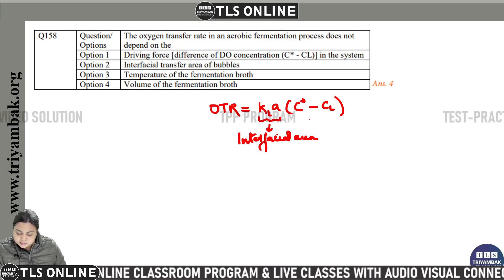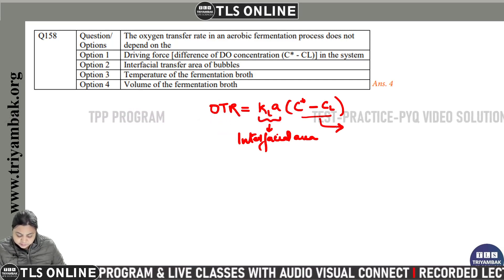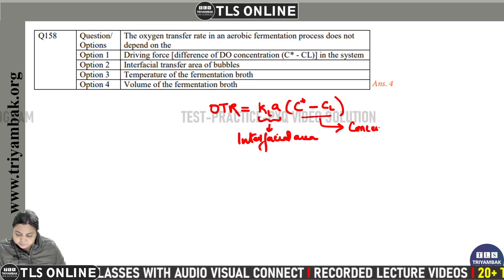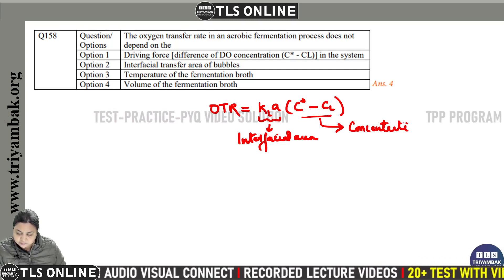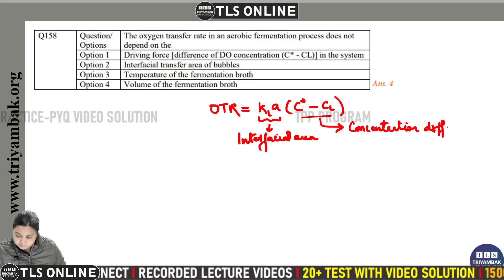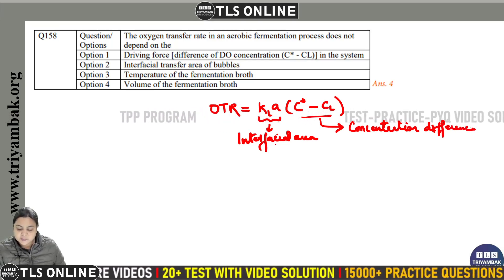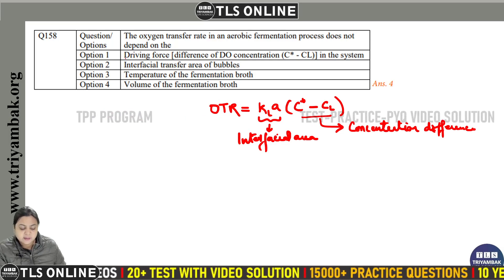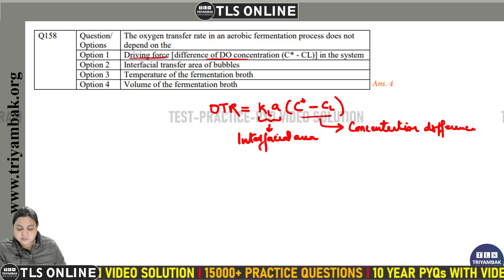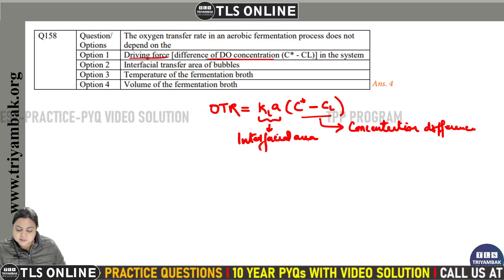C* minus CL is the concentration difference — this is the driving force, representing the difference of the dissolved oxygen concentration, C* minus CL, in the system.